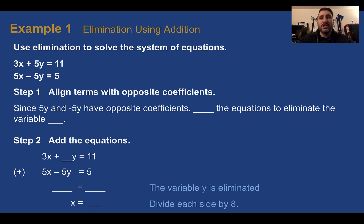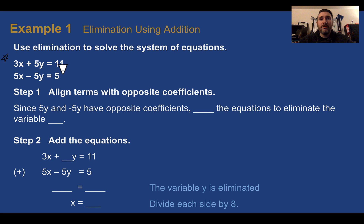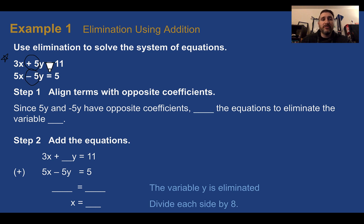Example 1: elimination using addition. We're going to use elimination to solve the system of equations. We need to align terms with opposite coefficients. We're given 3x plus 5y equals 11, and 5x minus 5y equals 5. You want it in standard form — something x plus something y equals a constant for both equations. Line up the x's, y's, and constants. We find the ones with opposite coefficients: plus 5y and minus 5y — those are opposites. Because they have opposite coefficients, we can add, and that's going to eliminate the y.